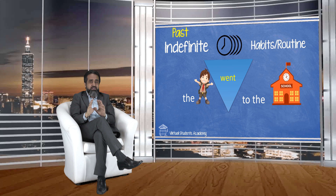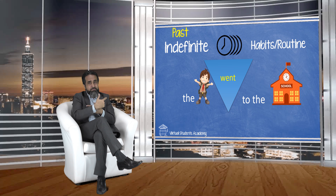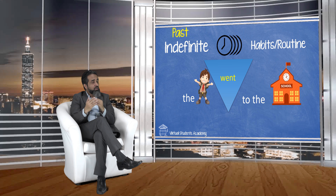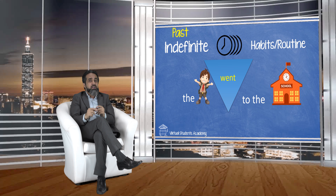Past indefinite is the tense where we use the second form of the verb, shown here in yellow color. The example is: 'The boy went to the school.'